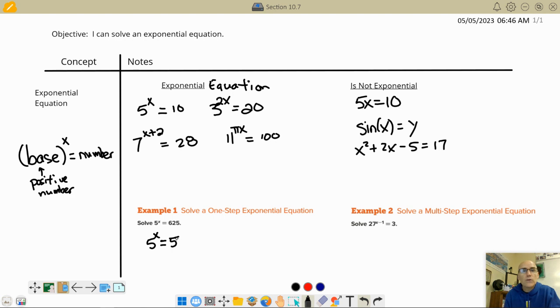5 squared is 25. So if I take 25 times another 5, that would be 5 cubed. So let's list a few over here. So we just said 5 squared equals 25. 5 cubed equals 125 because you multiply by 5.